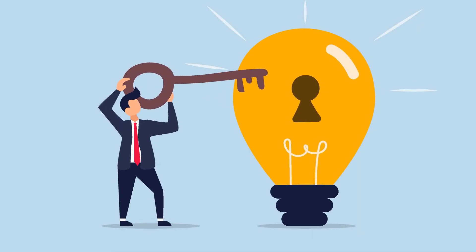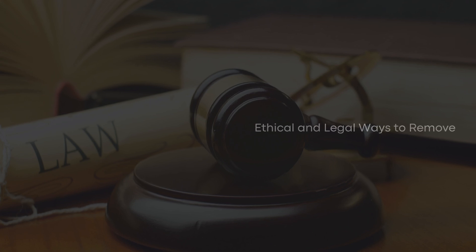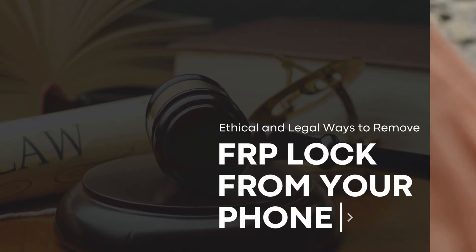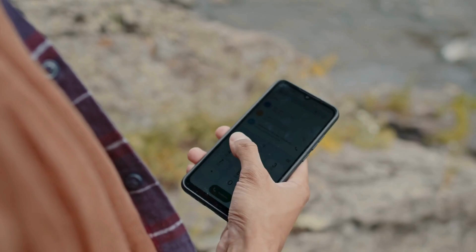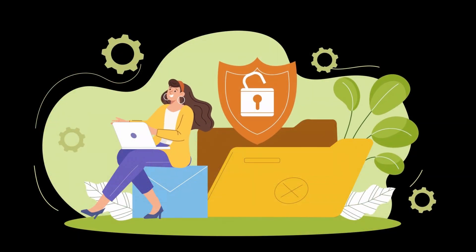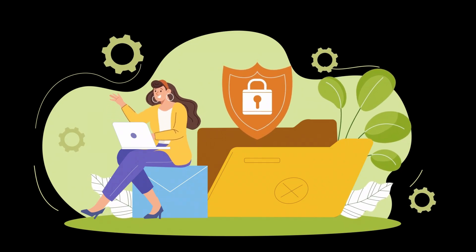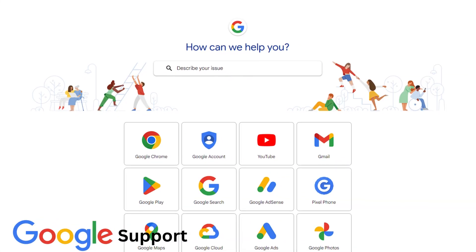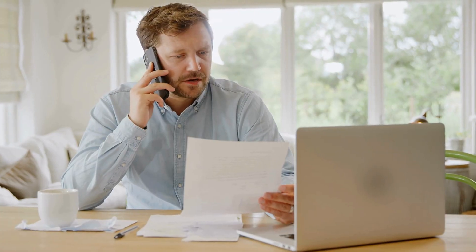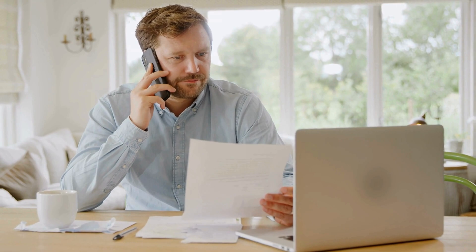Besides using unlocking services, there are other ethical and legal ways to remove the FRP lock from your phone. One method is to contact the original owner and ask them to log in with their Google account to remove the lock. If that's not possible, you can visit an authorized service center for your device brand. They have the tools and permissions needed to unlock your phone legally. Another option is to reach out to Google support. If you can provide proof of ownership, they might help you regain access.